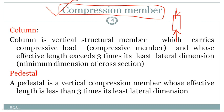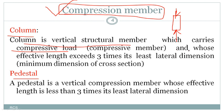Let me define what a column is. A column is a vertical structural member which carries a compressive force. A column is a compression member — meaning it is subjected to compressive force. One more point to define the column is whose effective length exceeds three times its least lateral dimension. As we have decided, our column is a compression member.